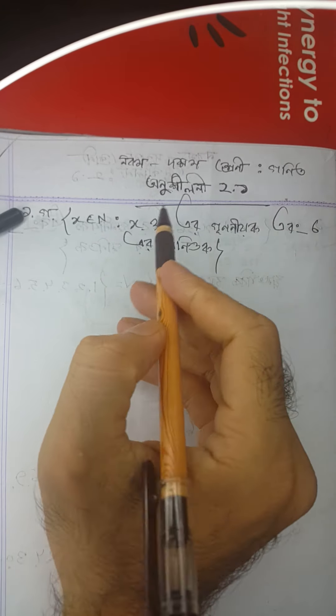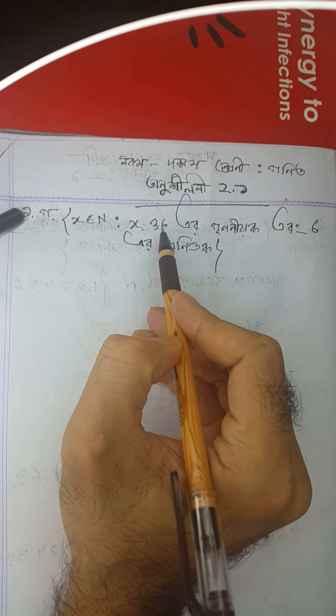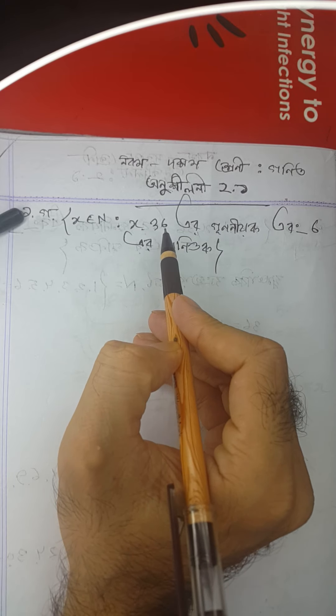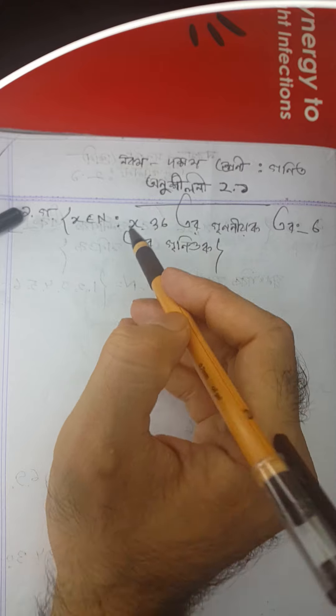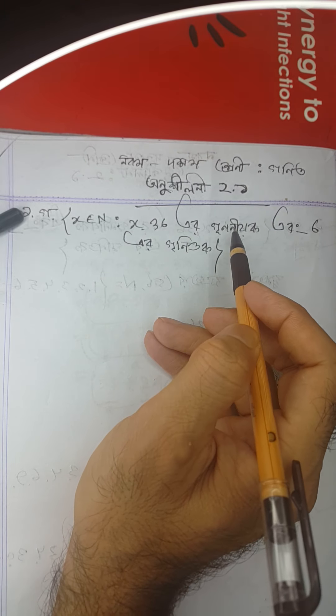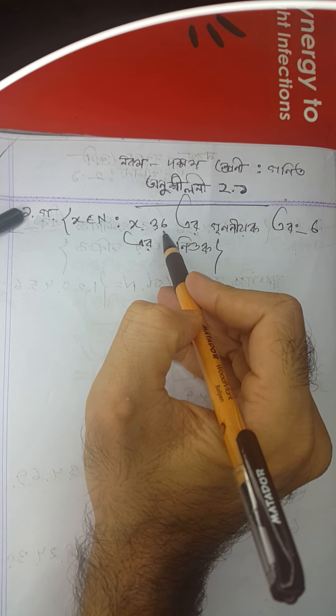Let's begin solving this problem. We have X such that X is a factor of 36 and X is a multiple of 6. First, we need to find all the factors of 36.